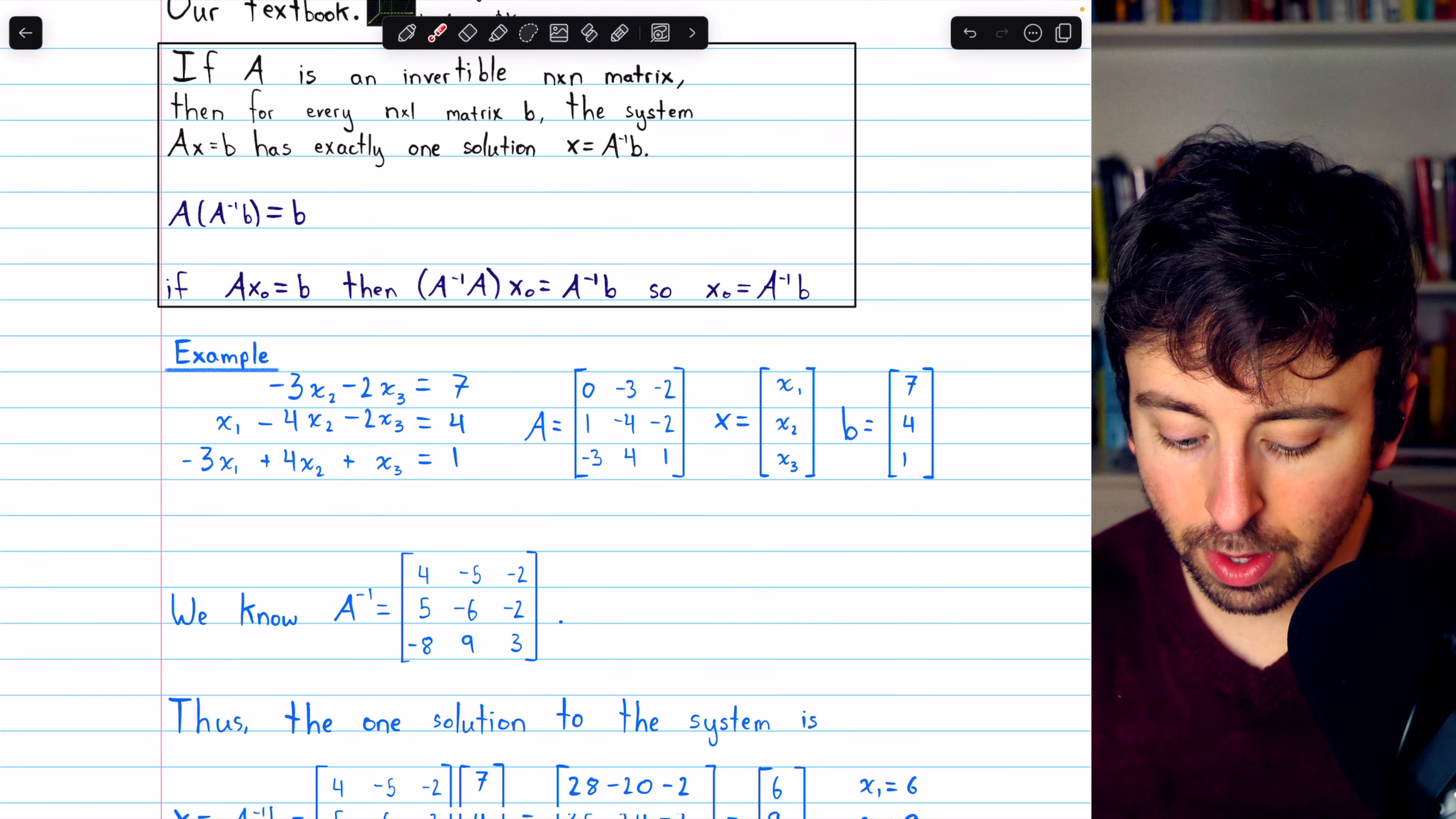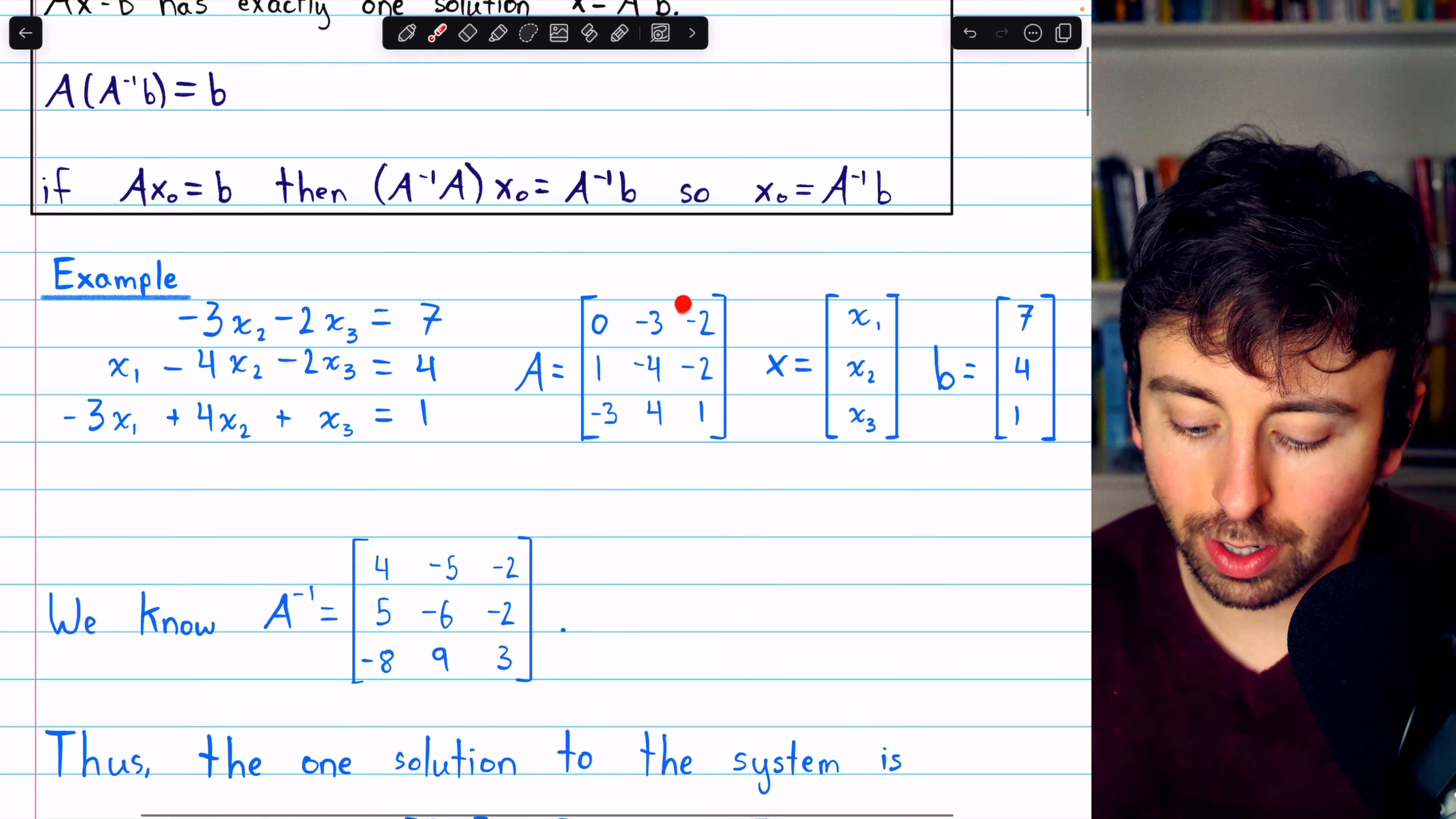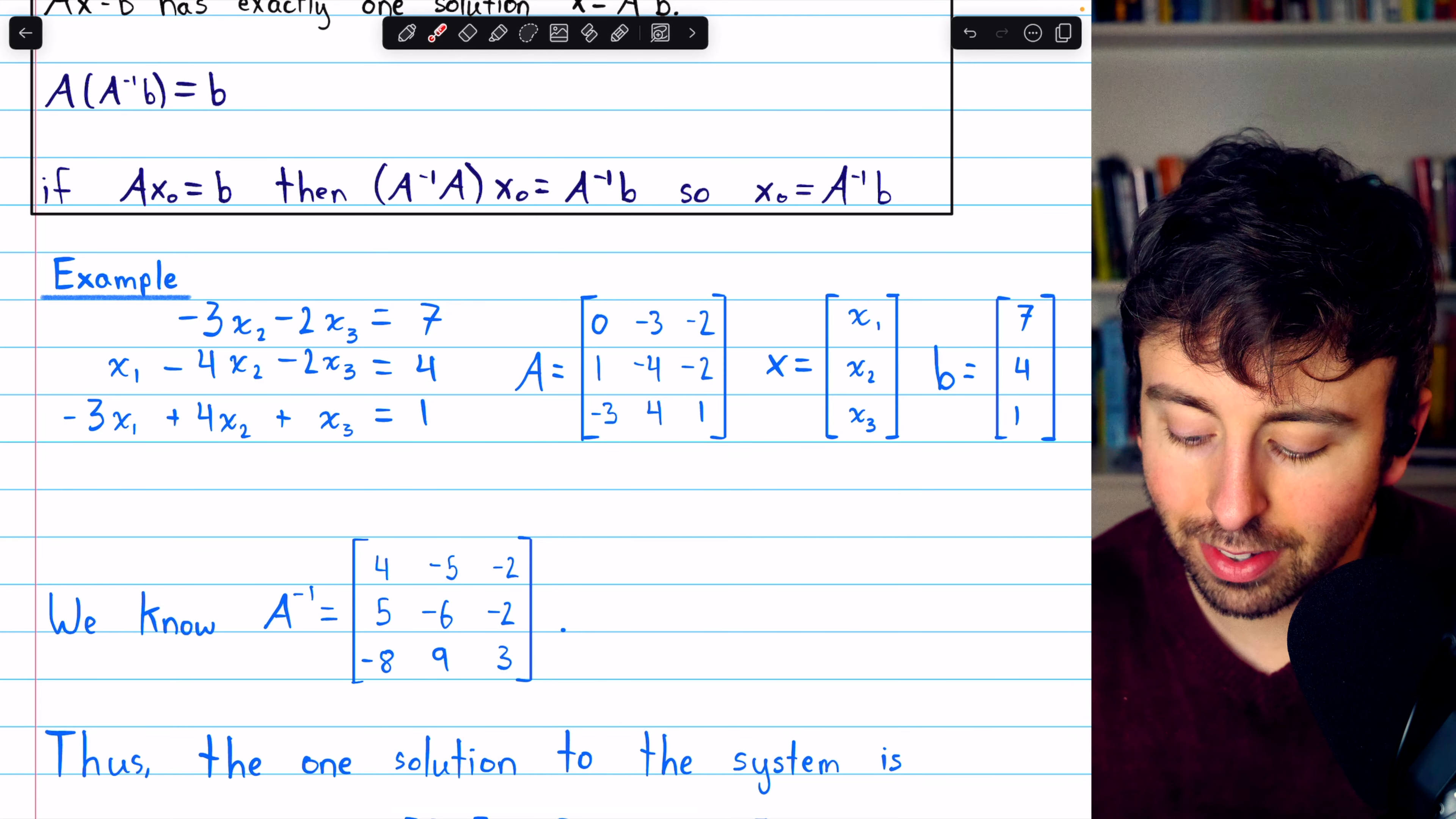Here is an example. We have a system of equations consisting of three equations and three variables. We can, of course, represent the coefficient matrix like this, A equals, here are the coefficients.